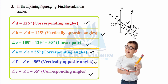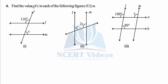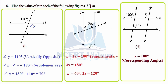First focus on whatever is given, then correlate using properties. Question four: find the value of x in each figure if l is parallel to m. In the first figure, 110° is given. Recall the properties — if you know this angle and add them, you can use interior angles on the same side of a transversal being supplementary. Call this unknown angle y. By vertically opposite angles, y equals 110°.